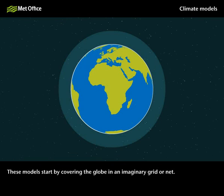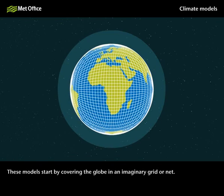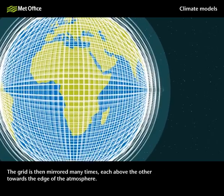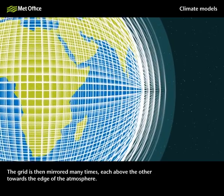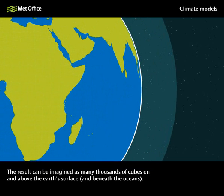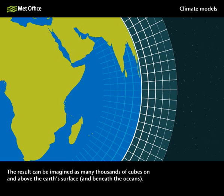These models start by covering the globe in an imaginary grid or net. The grid is then mirrored many times, each above the other towards the edge of the atmosphere. The result can be imagined as many thousands of cubes on and above the Earth's surface and beneath the oceans.